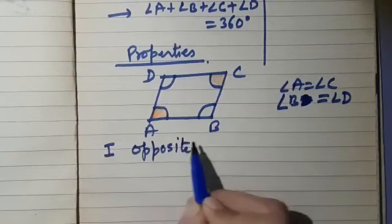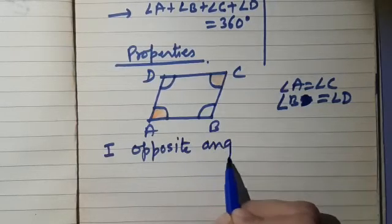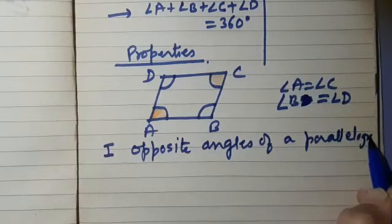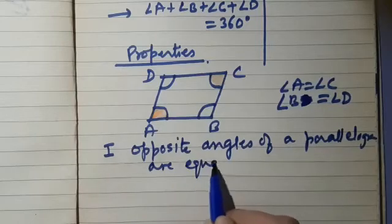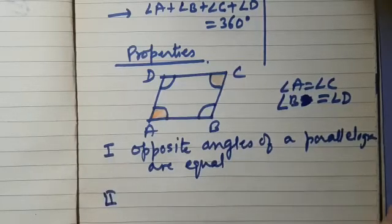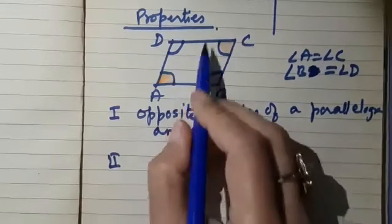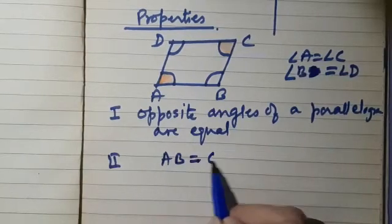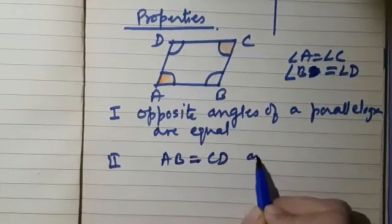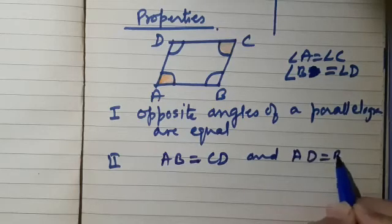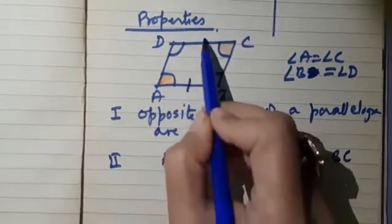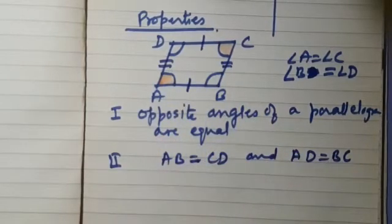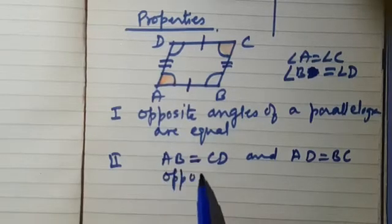Write this down — opposite angles of a parallelogram are equal. The second property: both pairs of opposite sides are also equal. So AB equals CD and AD equals BC. Therefore, opposite sides of a parallelogram are equal.